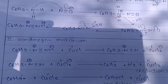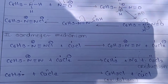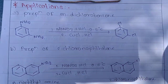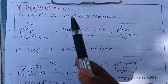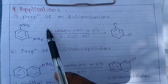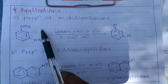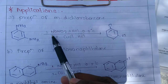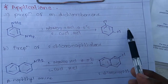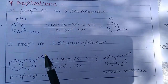The Cu returns to +1 charge, completing the cycle. This is the simple mechanism of the Sandmeyer reaction. Now let's talk about the applications. The first application is the preparation of meta-dichlorobenzene. Here, two NH2 groups are present; they are converted into N2+ Cl-, and after the Sandmeyer reaction, meta-dichlorobenzene is formed.